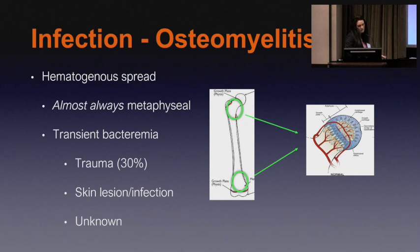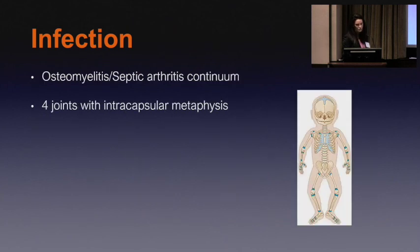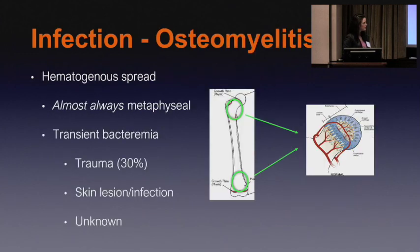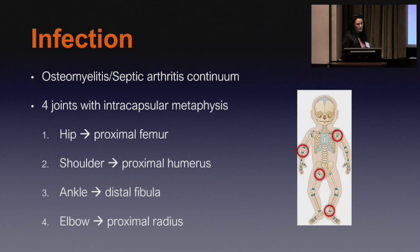A couple words on osteomyelitis — it's almost always metaphyseal in kids. The reason is unique characteristics of the blood supply in the metaphysis, where capillaries take a hairpin loop. In a transient bacteremia — up to 30% of the time even from a simple trauma — bacteria can get clogged in this region. There's also low pH here, which breeds bacteria. There are four joints with an intracapsular metaphysis — the hip, shoulder, ankle, and elbow — so osteomyelitis in those locations can break into the joint and present as an acute septic arthritis.